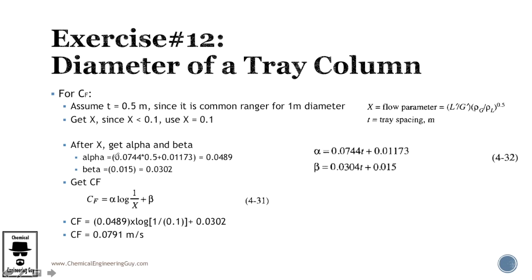Okay, so let's get alpha, given the tray spacing of 0.5. You get this. Let's get beta. You get this. Let's substitute alpha, beta, and X value, which we already have it, 0.1. You get this value, 0.0791.